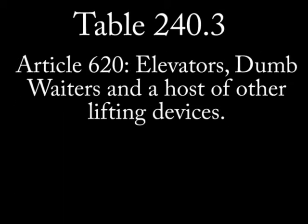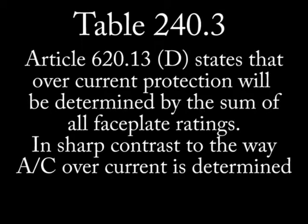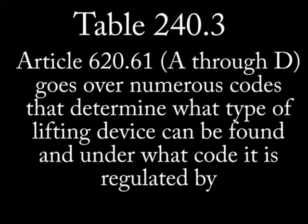Let's look at elevators, dumbwaiters, and other lifting units covered under article 620. There are only two articles directly related to overcurrent protection on this subject. The first is article 620.13 paragraph D, which stipulates that overcurrent protection will be determined by the sum of all faceplate ratings — in sharp contrast to the air conditioning code. The next item is article 620.61 A through D, which points out where you can find specific overcurrent requirements depending on location and type of lifting device.